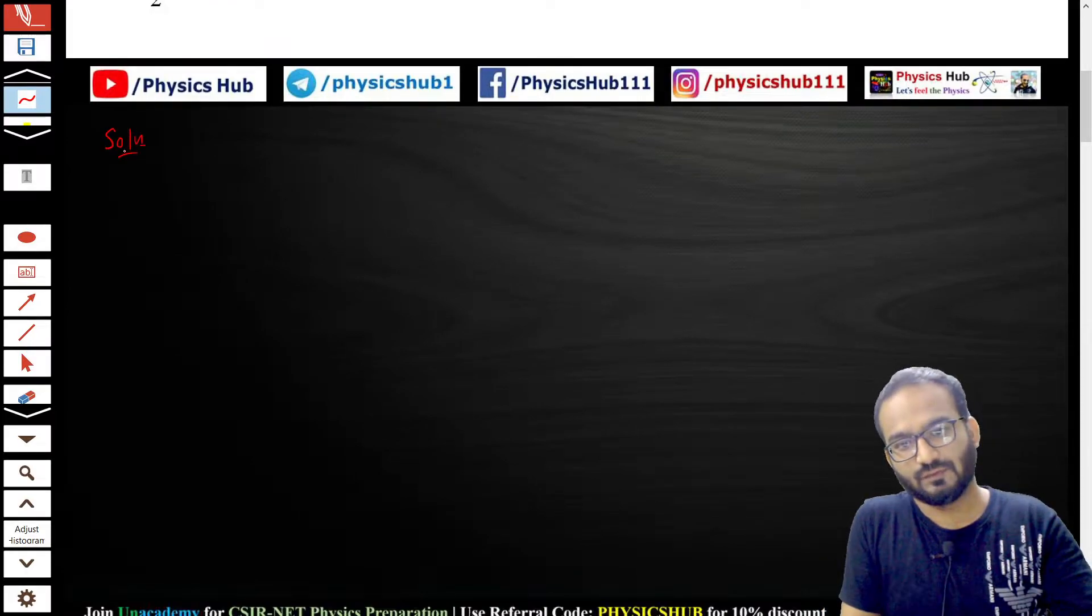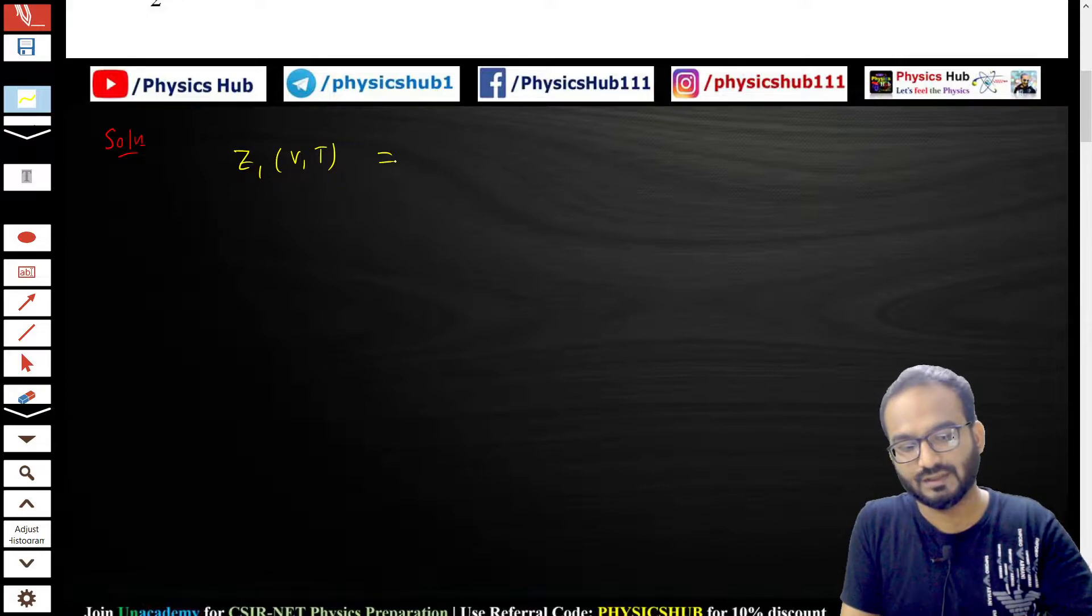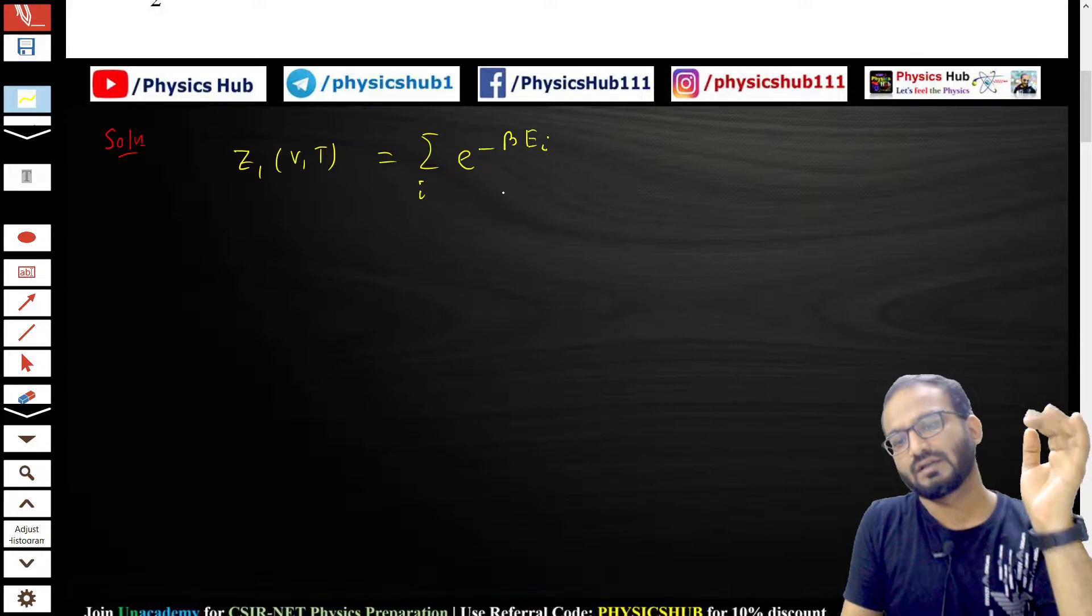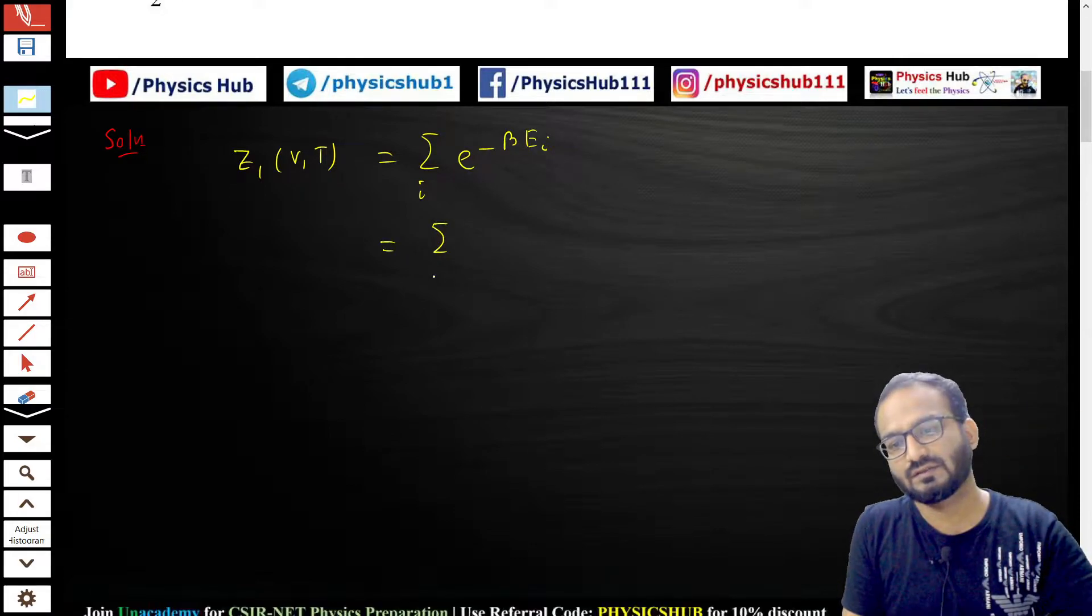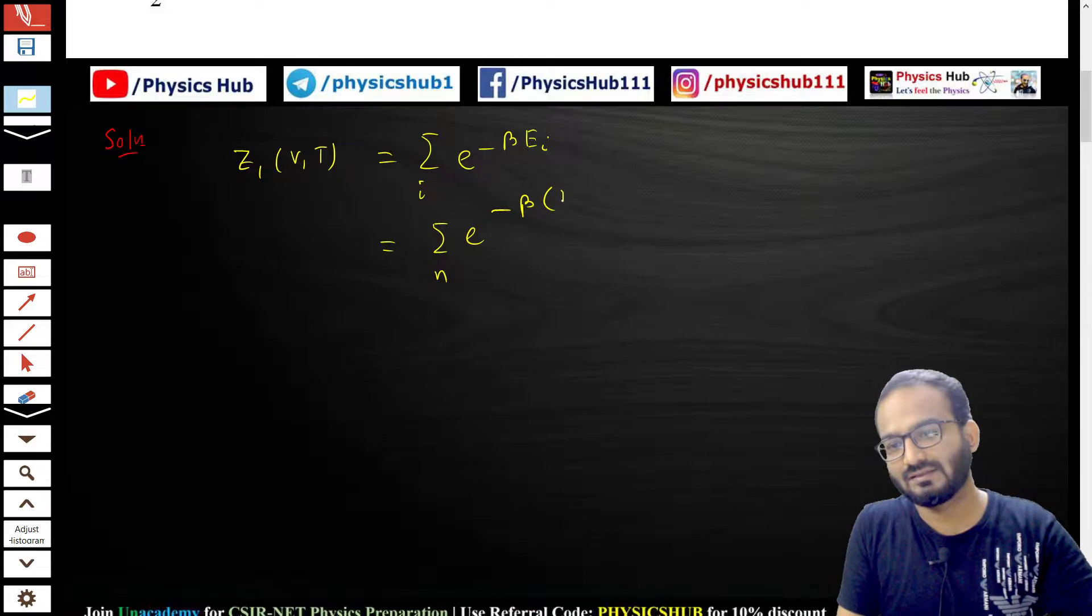First, we're evaluating for one oscillator. Z₁(V,T) equals sum over i of e to the power minus beta E_i. Since E_i is given as E_n, the sum becomes sum over n of e to the power minus beta times (n + 1/2)ℏω.